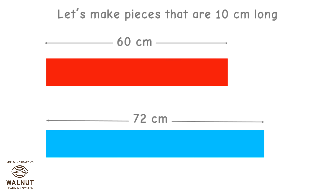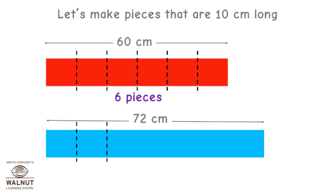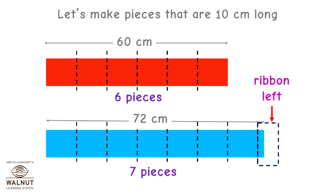Let's make pieces that are 10 cm long. If you divide 60 by 10, you will get 6 — that is 6 equal pieces, with no ribbon left. Now make pieces of blue ribbon: if you divide 72 by 10, you will get 7 — that is 7 equal pieces. You have 2 cm of ribbon left. So we cannot make pieces that are 10 cm long. We just can't divide it exactly.